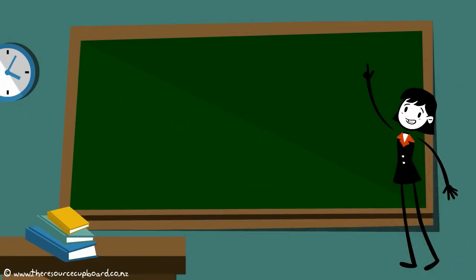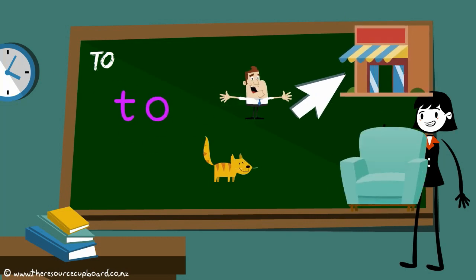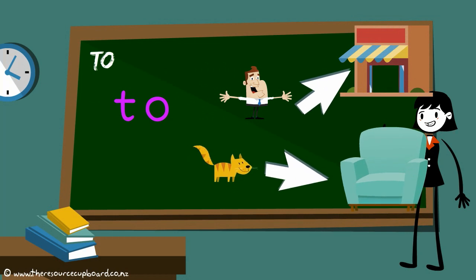Anywho, two number one. That's confusing. The first two is T-O. It tells us where someone went,